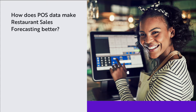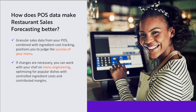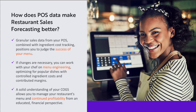POS data is collected in real time with easily reviewable records, allowing you to capitalize on quickly moving sales trends and changing circumstances. The feed-through of POS data into your restaurant accounting system eliminates duplicate manual data entry, keeps your critical operating metrics up to date at all times, and lets you track performance relative to forecast continuously. Granular sales data from your POS combined with ingredient cost tracking positions you to judge the success of your menu. If changes are necessary, you can work with your chef on menu engineering — optimizing for popular dishes with controlled ingredient costs and strong contribution margins.